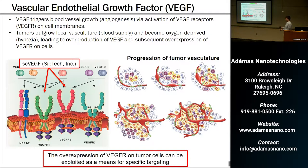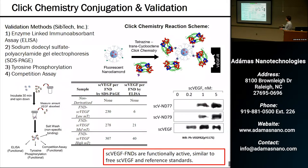If we can functionalize our diamonds with VEGF, we can exploit that as a means to target these overexpressing tumor cells. We did that via a click chemistry route using transcyclooctene–tetrazine chemistry — bioorthogonal click chemistry — to attach a single-chain VEGF protein to the surface of the diamonds. We did several validations including ELISA and SDS-PAGE to verify that the VEGF was attached and functional, confirming that our conjugation scheme works.